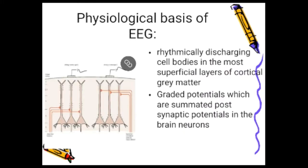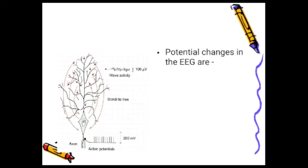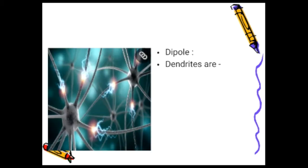Physiological basis of EEG: the activity recorded in the EEG is that of rhythmically discharging cell bodies in the most superficial layers of cortical gray matter. EEG is due to graded potentials, which are summated post-synaptic potentials in brain neurons. These potential changes are due to current flow in a fluctuating dipole formed by dendrites of cortical cells and their cell bodies. Dendrites are the sites of non-propagated hypo- and hyperpolarizing local potential changes, with a continuously shifting dipole.